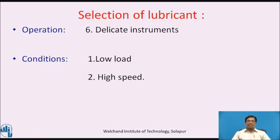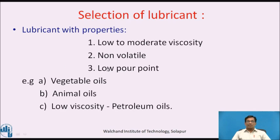The next operation is delicate instruments. Conditions include low load and high speed. The lubricant should have low to moderate viscosity, be non-volatile in nature, and show a low pour point. Examples of suitable lubricants include vegetable oils, animal oils, or low viscosity petroleum oils for this particular operation.